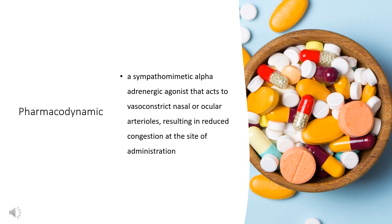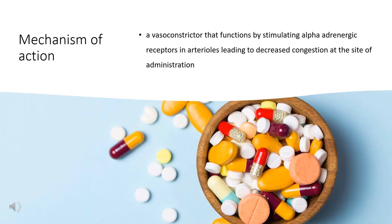Naphazoline is a sympathomimetic alpha-adrenergic agonist that acts to vasoconstrict nasal or ocular arterioles, resulting in reduced congestion at the site of administration. It functions by stimulating alpha-adrenergic receptors in arterioles and causes the release of norepinephrine in sympathetic nerves. Norepinephrine binds to alpha-adrenergic receptors and causes vasoconstriction. Naphazoline is also a mild beta-adrenergic receptor agonist, which can cause rebound vasodilation after the alpha-adrenergic stimulation has ended. Its release of norepinephrine also triggers a negative feedback loop which decreases production of norepinephrine, and can lead to rhinitis medicamentosa after long-term use when Naphazoline is stopped.